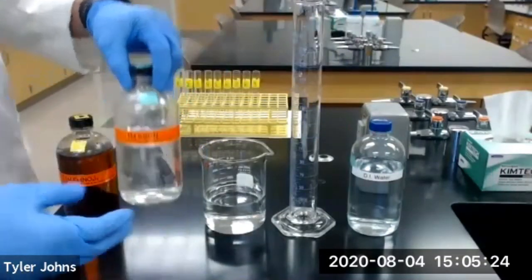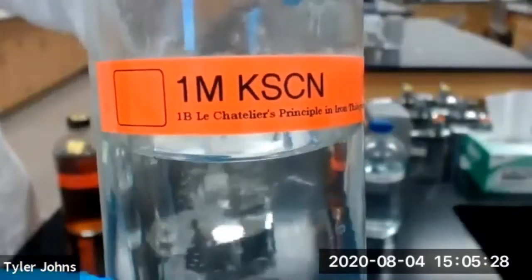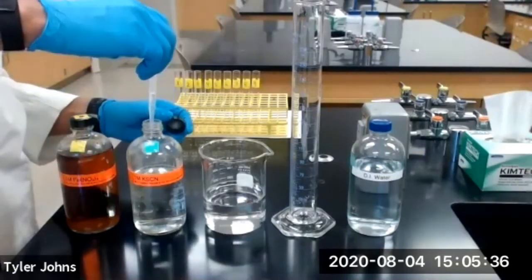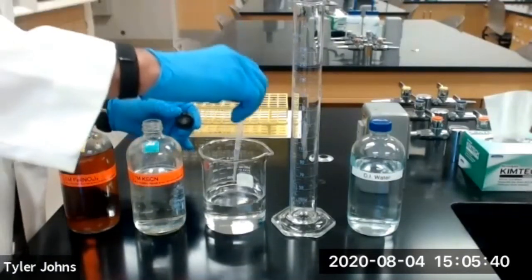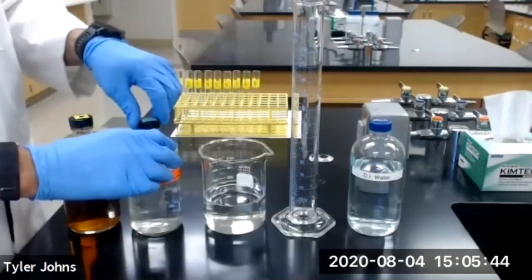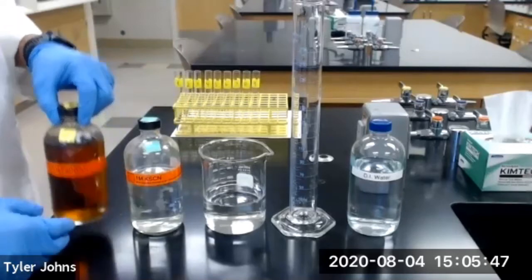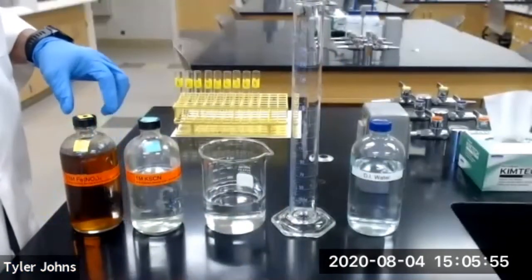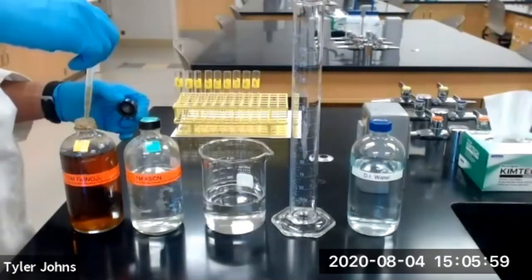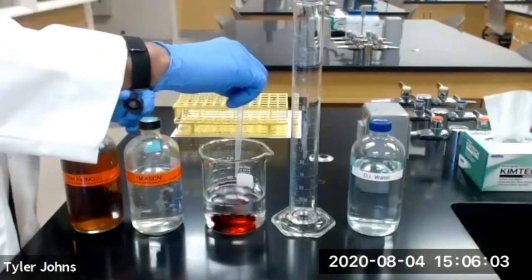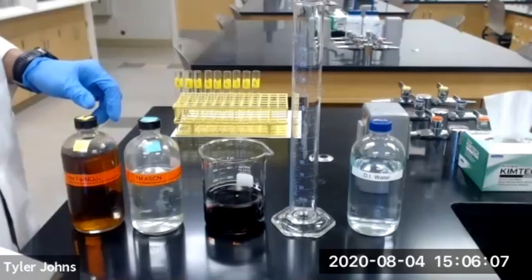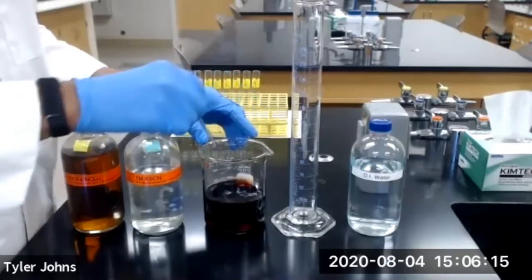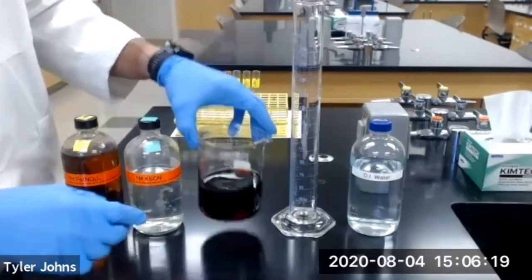Next, we'll add one milliliter of one molar potassium thiocyanate and then we'll add one milliliter of Iron Thiocyanate and we'll stir our solution to mix, and this stock solution has an intense red color due to the formation of the Iron Thiocyanate Complex.